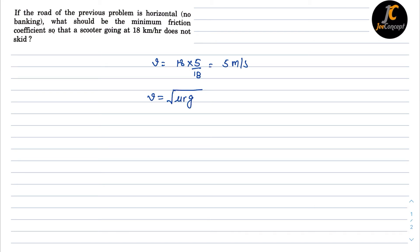So mu will become v squared upon r into g. So the velocity is 25, the radius in the previous problem was 10, and g is also 10, so this will become 1 by 4. So the value of mu is 0.25. This is the solution of the problem.